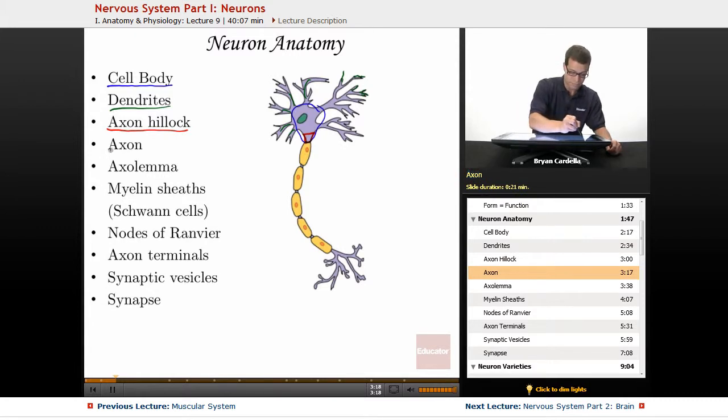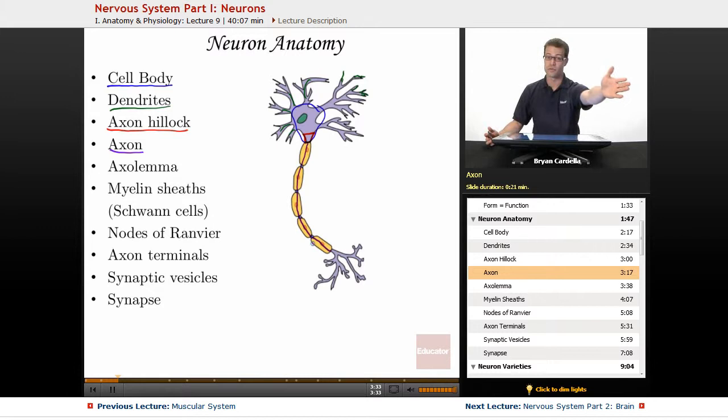So the axon is this classic long part. Now, I'm drawing a purple line through those yellow sheaths, which will be mentioned in a sec. But the axon is typically long and has to do with sending that electrical signal to some other part of the nervous system.